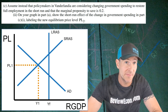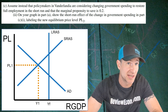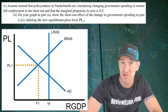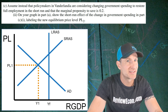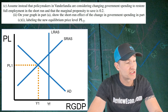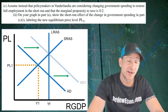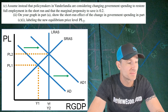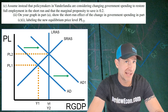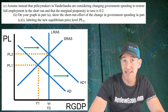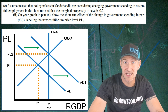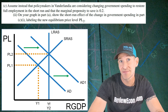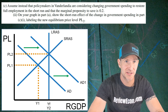Next, we're going to show the impact of that increase in government spending on the ASAD model we already drew. That increase in government spending is going to shift the aggregate demand curve to the right, increasing the price level and increasing real GDP output. You're going to label that new price level PL2 — and if you got that, you get yourself your next point.